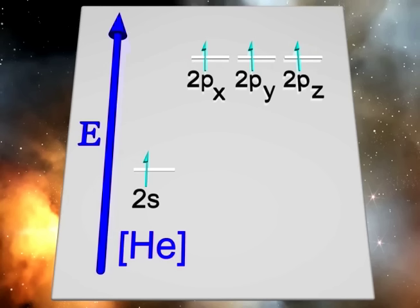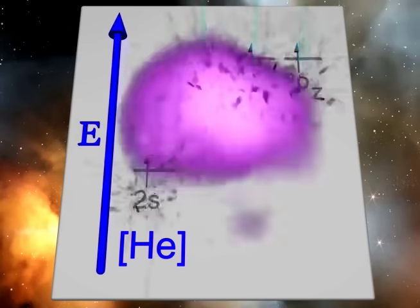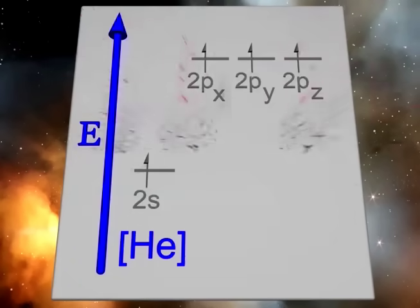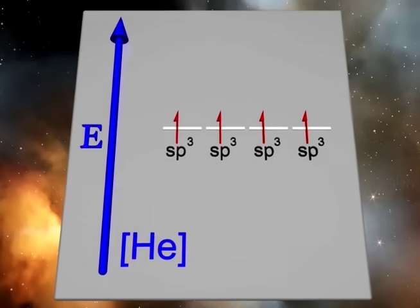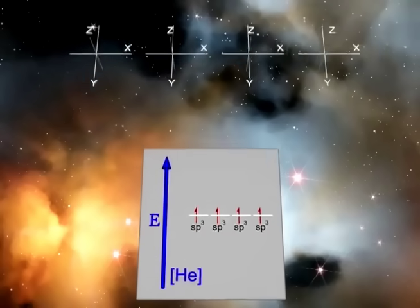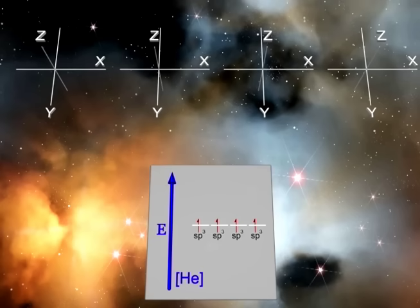Thus, when we mix the 2s atomic orbital with all three 2p atomic orbitals, we create four new degenerate energy hybrid orbitals.